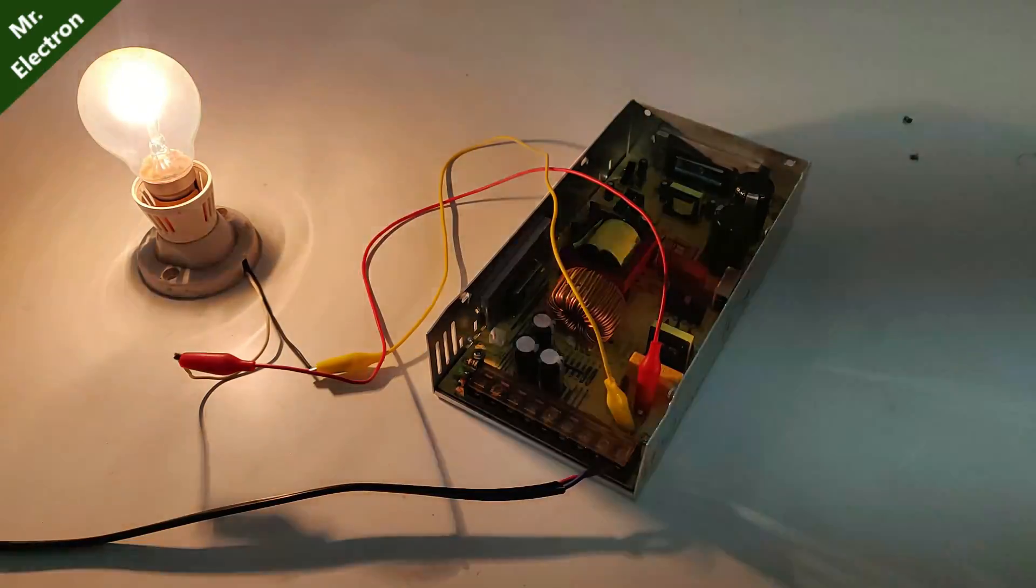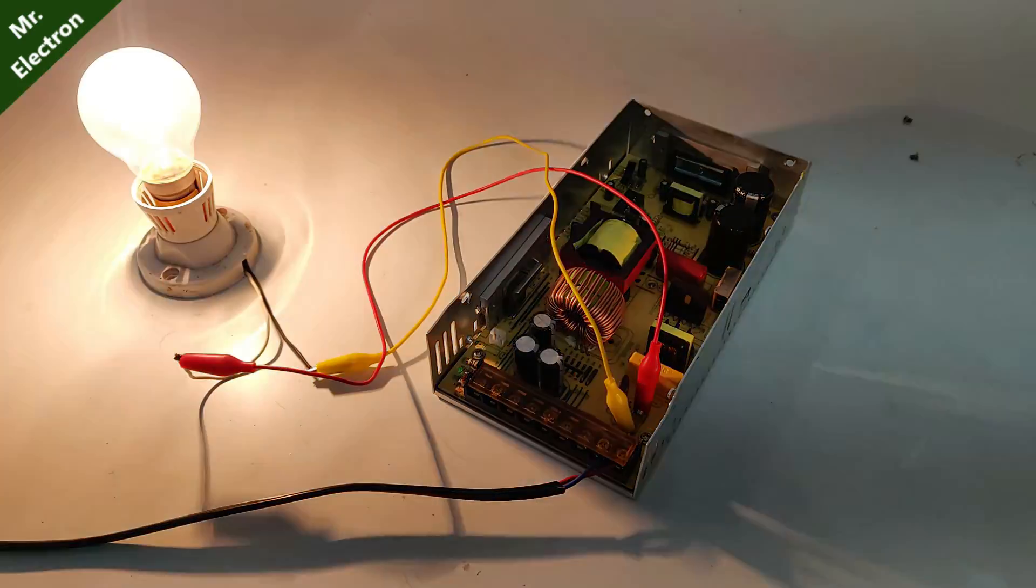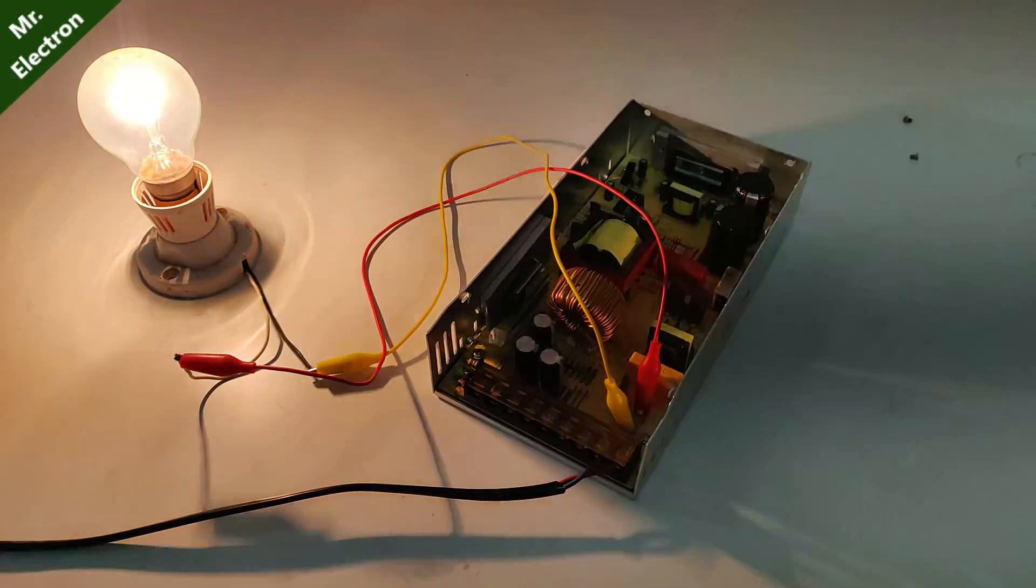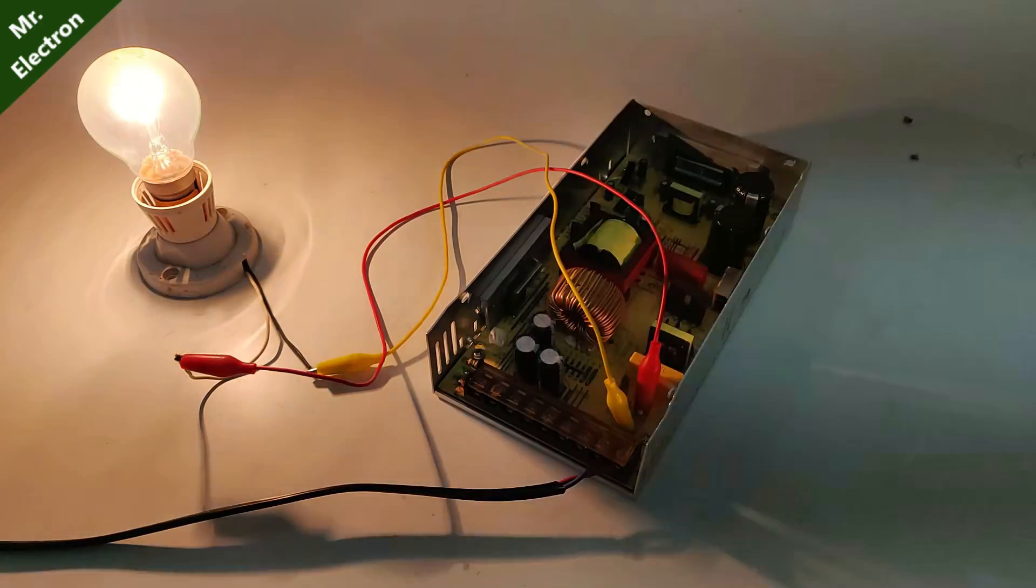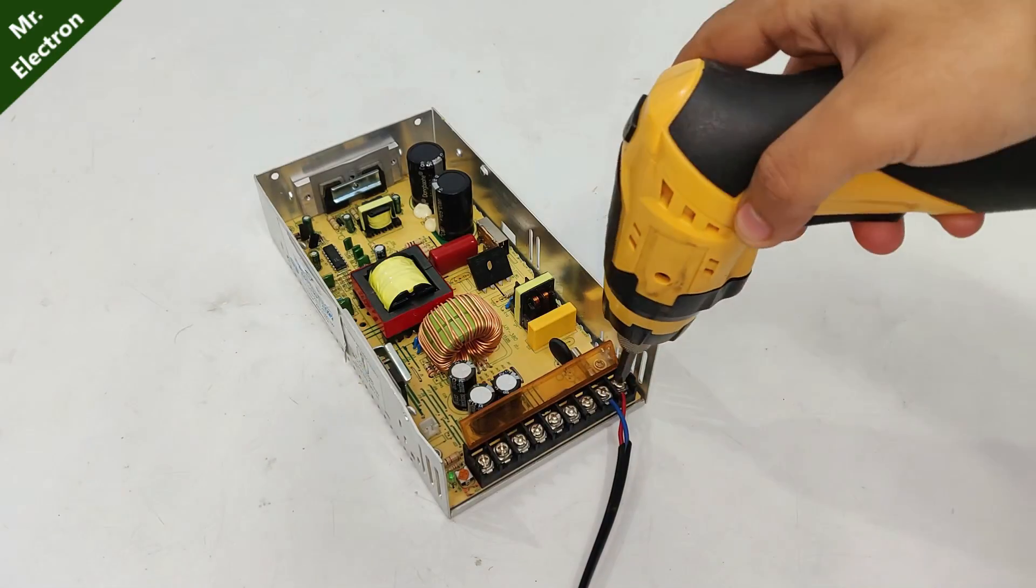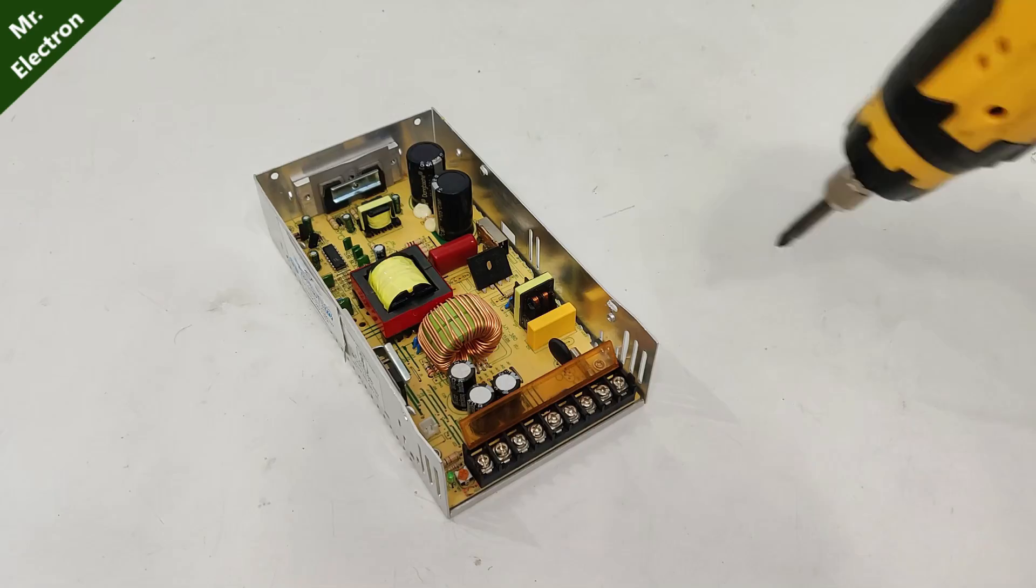Oops. Now because the bulb is glowing really bright, it means that there is some major fault with the circuit because of which it is drawing way too much starting current.